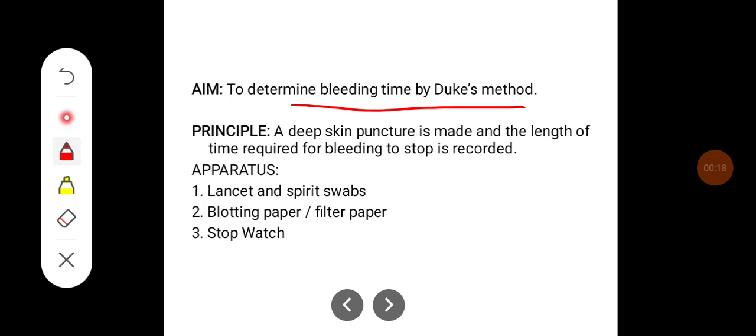Principle: a deep skin puncture is made and the length of time required for bleeding until the stoppage of bleeding is recorded. The apparatus required are lancet and spirit swabs, blotting paper or filter paper, and stopwatch.